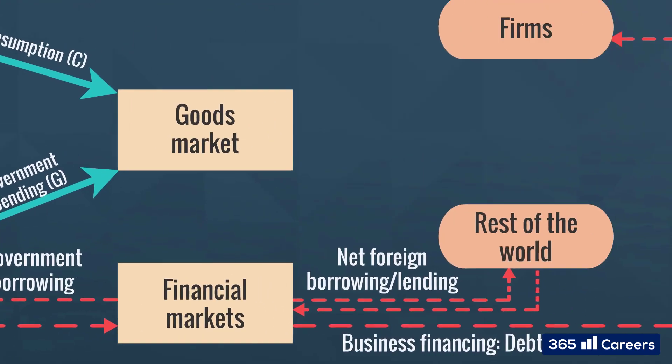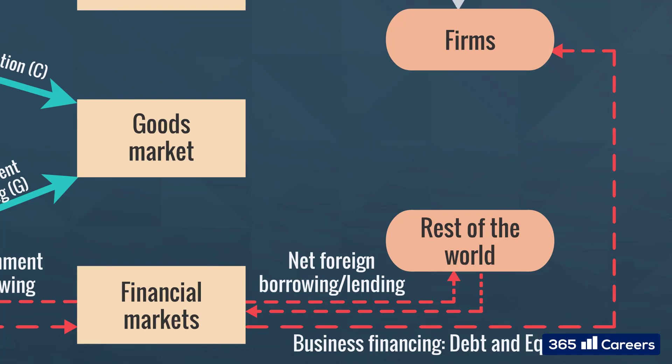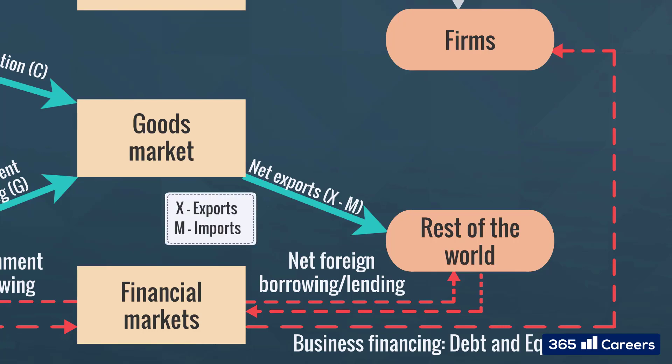Next, we will concentrate on the trade and capital flows involving the rest of the world. We are interested in the net exports figure, which reflects the difference between the value of goods and services sold to foreigners, or exports X, and the purchases from other countries, or imports M.